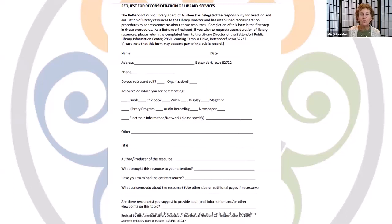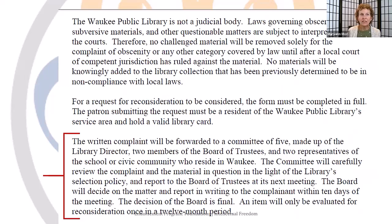To what specifically in the item do you object? What do you feel might be the result of exposure to this item? For what age group would you recommend this item? Did you read, view, or hear the entire material — and if not, which parts? Are you aware of the judgment of this material by professional critics? Have you seen or heard a review of this item, and if so, please name the source. What would you like the library to do about this item? The form asks for the complainant's signature and date. Often a complainant just wants to be heard, and the task of filling out a reconsideration form is enough to end the complaint. Another Iowa library's reconsideration policy outlines the steps for a challenge, stipulates the formation of a review committee, and the general timeframe of the process.